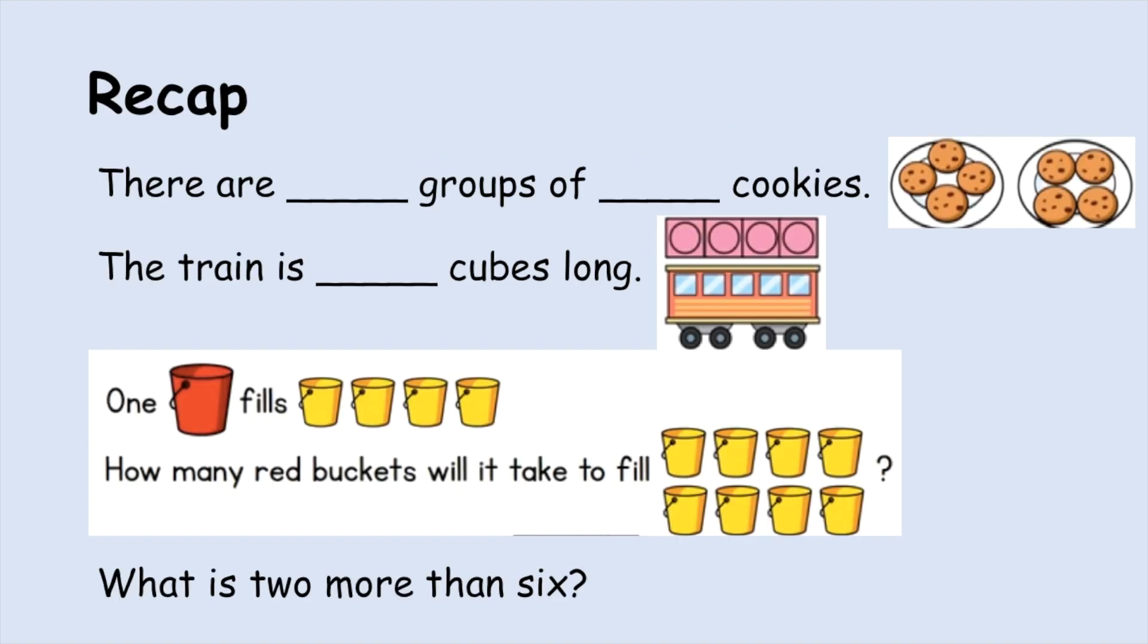Now for our recap today, here are your questions. There are something groups of something cookies. Here are the cookies. The train is something cubes long. One big red bucket fills four small yellow buckets. How many red buckets will it take to fill eight small yellow buckets? That one's tricky. What is two more than six? Now think about what more means before you answer that question. Pause the video to complete these.